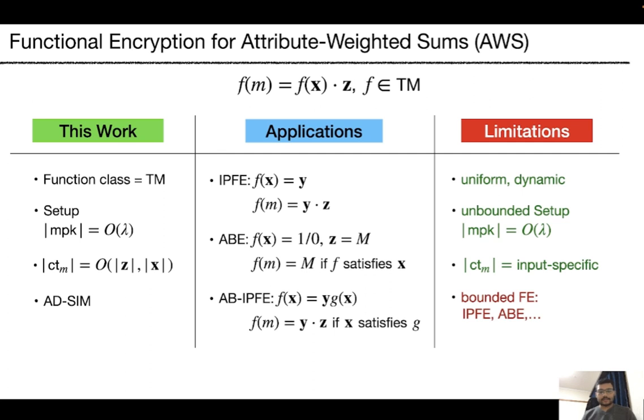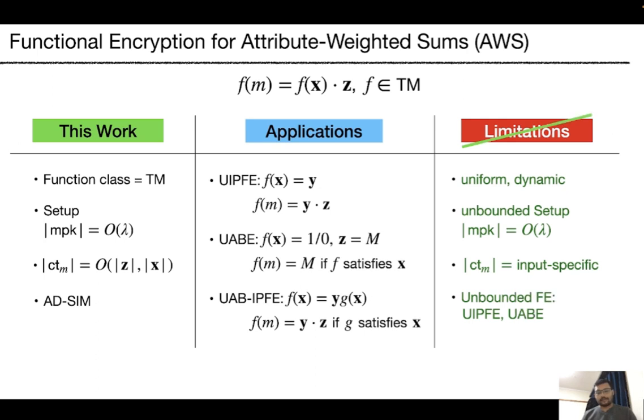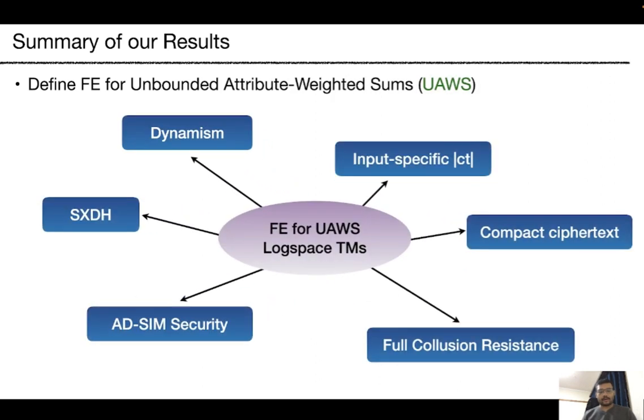Due to all these positive features, the functionality also captures unbounded FE schemes such as unbounded IPFE or unbounded ABE. In summary, we define FE for unbounded AWS and construct it for logspace Turing machines.